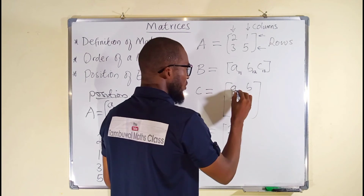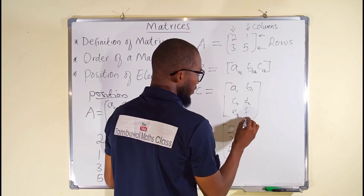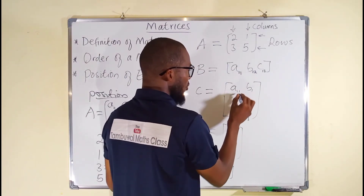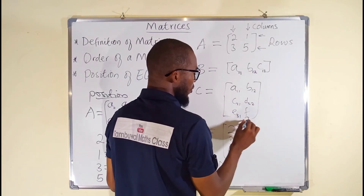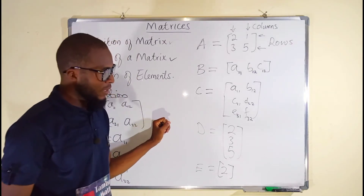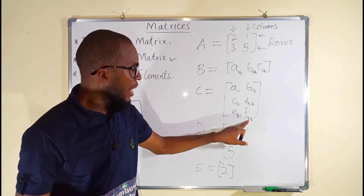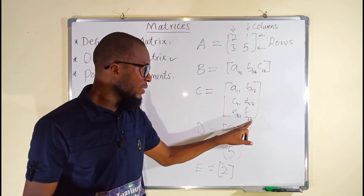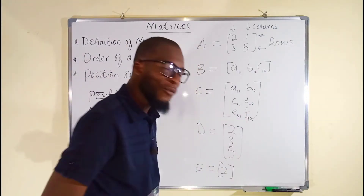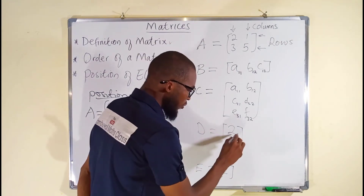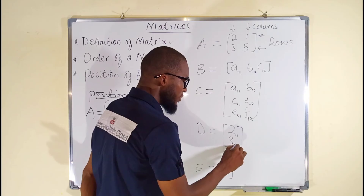For matrix C, the rows are first, first, second, second, third, third, while the columns alternate: first column, second column, first column, second column, first column, second column. So F is an element at the third row, second column. For matrix D, all elements are from the same column but different rows — row 1, row 2, row 3 — but all columns are the same.